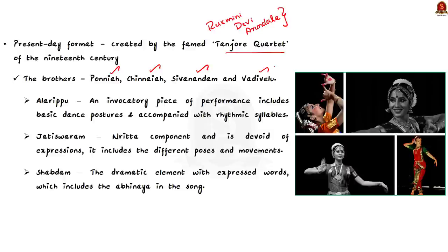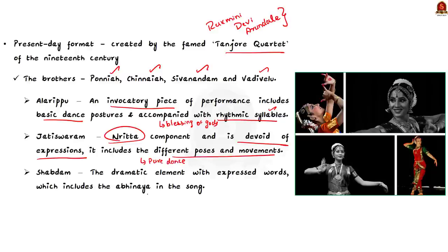The Tanjavur Quartet defined the elements of Bharatanatyam recital. First is Alarippu. It is an invocatory piece of performance which includes basic dance posture and it is accompanied by rhythmic syllables. It is meant to seek the blessings of the gods. The next is Jatiswaram. It is a Nritta component and it is devoid of expressions. It includes the different poses and movements. Here, Nritta means pure dance, a representation of rhythm through graceful movement of the body. The third is Shabdam. It is the dramatic element with expressed words which includes the Abhinaya in the song. The meaning of the lyrics of the song that the dancer performs is conveyed to the audience with the help of hand gestures, facial expression called Abhinaya. It is generally in praise of the glory of the god.